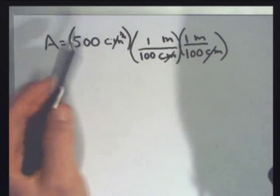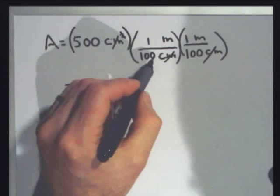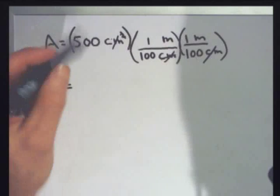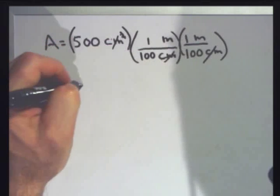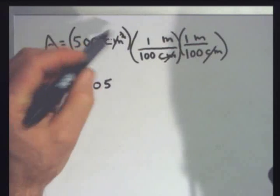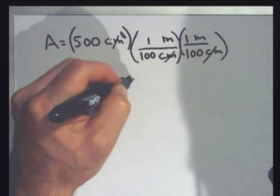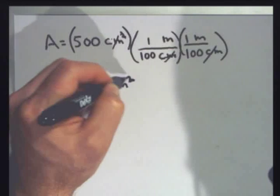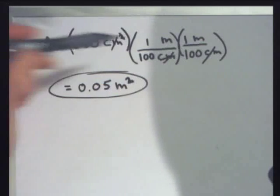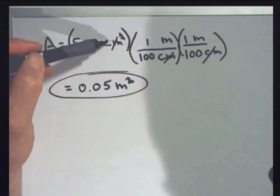My answer is going to be 500 times 1 divided by 100, times 1 divided by 100. That gives me 0.05, and my units are meters times meters — which is meters squared. That's good; it gives me an area. So rather than just dividing by 100 once, I've got to do it twice because there are 2 centimeters in centimeters squared.